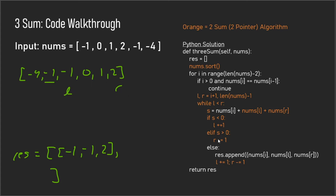We then execute l += 1 and r -= 1, shifting both pointers inward. We're now left with negative one, zero, and one, which also adds up to zero, so we append to the results array: negative one, zero, one. Then we're done with this iteration for i and move our i pointer upward.